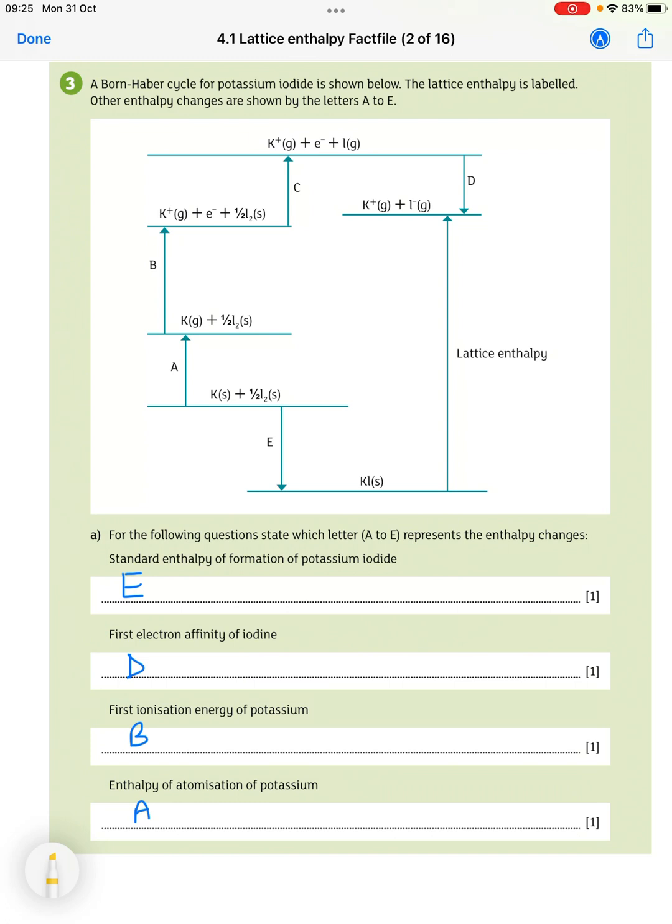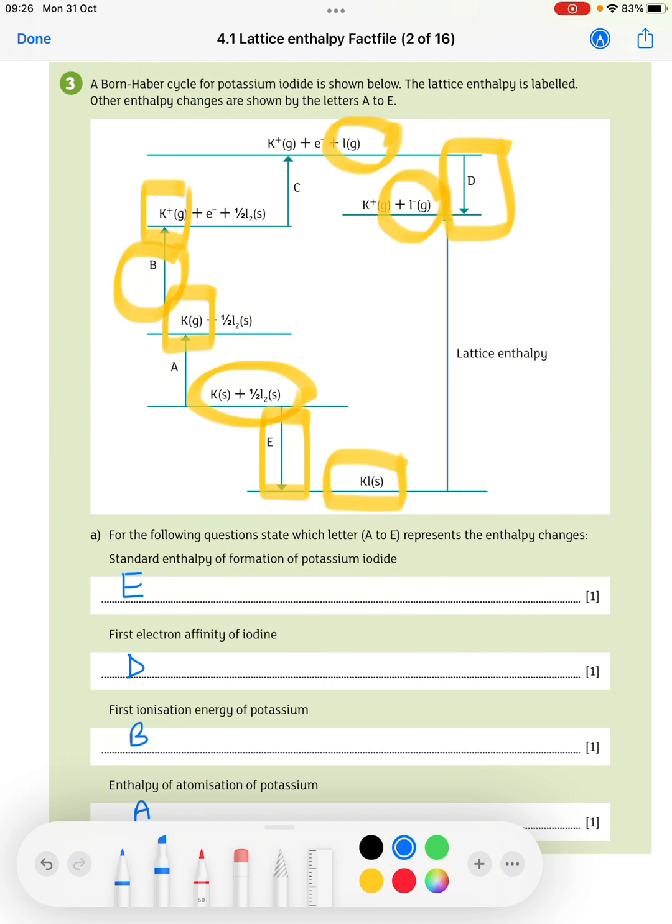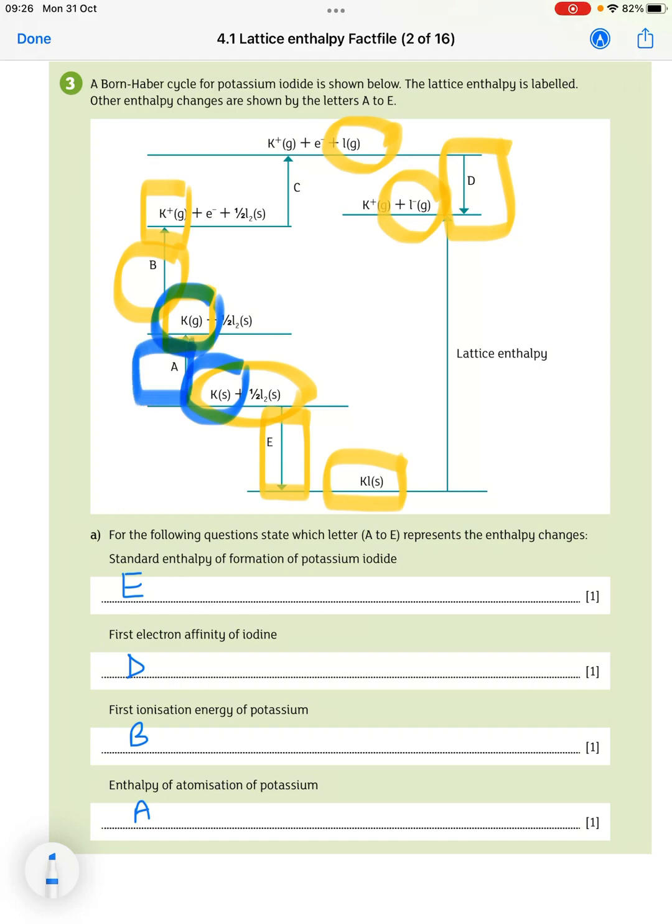So standard enthalpy of formation of potassium iodide from the elements in their standard states to the solid is E. The first electron affinity of iodine. So there's iodine just as a gas and as an ion. So the first electron affinity is D. First ionisation energy of potassium. So we're going from potassium gas to potassium ion. So that's B. And then the enthalpy of atomisation of potassium is A.